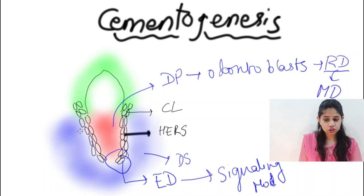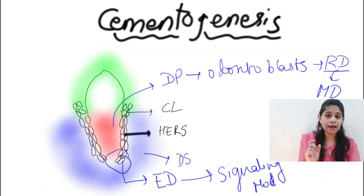Hertwig's epithelial root sheath is an epithelial structure, and near the epithelium there is always presence of connective tissue. The cells of the dental sac are cells of the connective tissue.